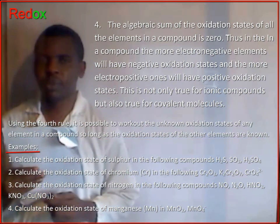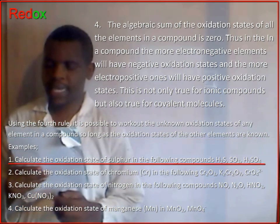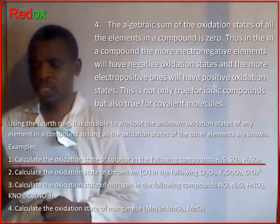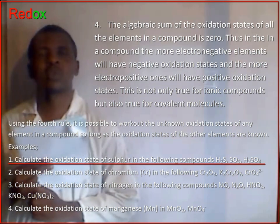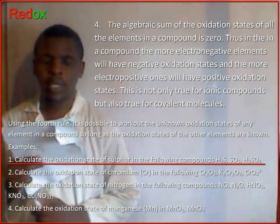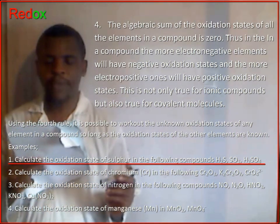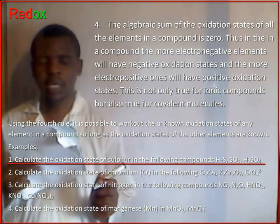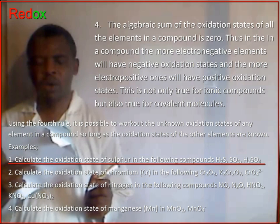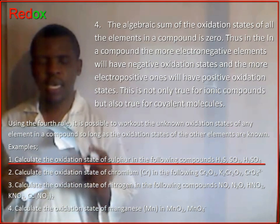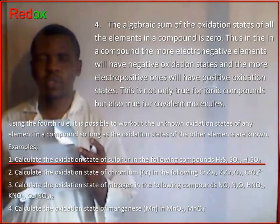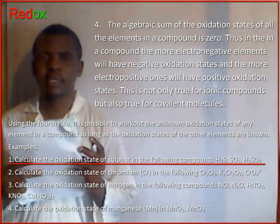Example: calculate the oxidation state of sulfur in the following compounds — hydrogen sulfide, sulfur trioxide, and sulfuric acid.